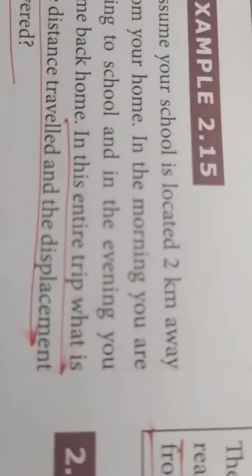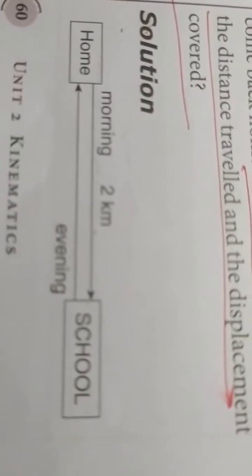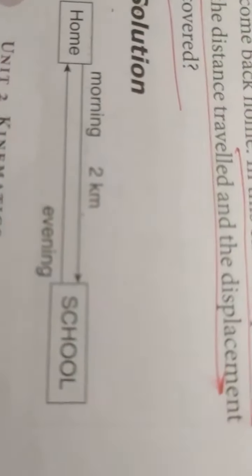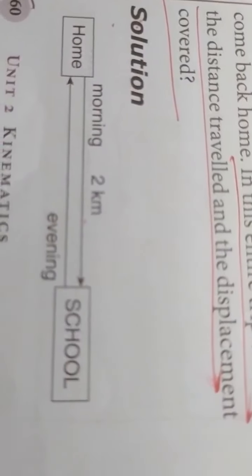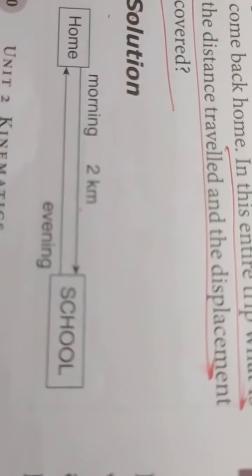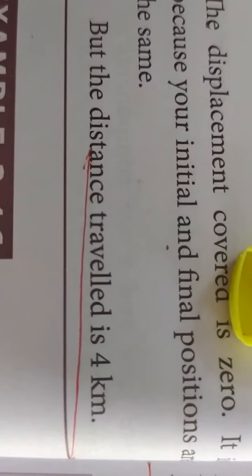When you travel from home to school daily — 2 km there and 2 km back — the total distance is 4 km. But the displacement is 0, because your initial and final positions are the same, which is your home. So the total distance travelled is 4 km, but there is no displacement.